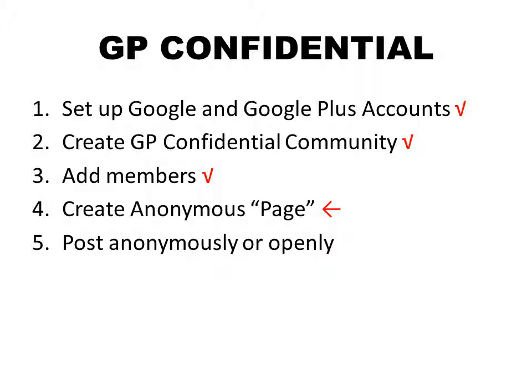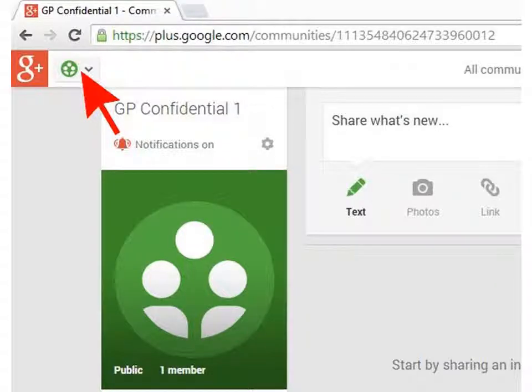The next stage is the slightly more fiddly bit, although it's relatively straightforward — that's creating the anonymous page. This will enable any member to post within your community without anyone being able to know which member of the group is posting. Until you've built up trust within your peer support group, that can be a really useful mechanism to get people's confidence up.